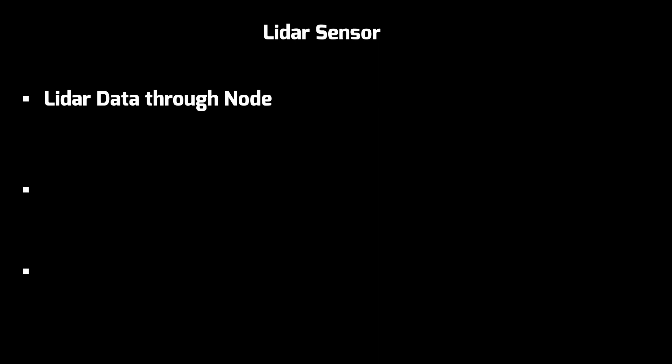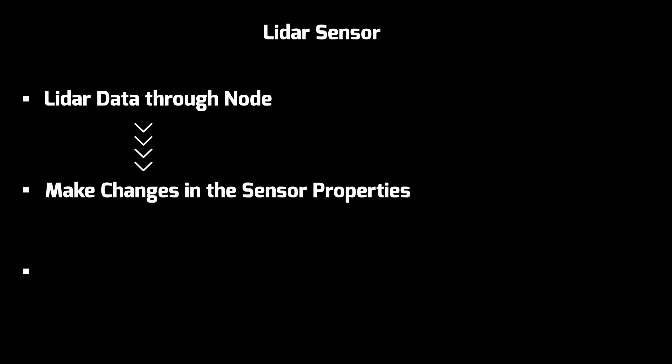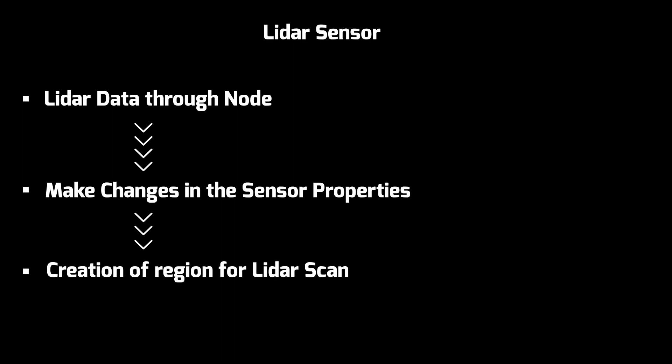First, we will understand the LIDAR data through our node. Then we will make changes in the sensor properties. And lastly, we will create regions of the LIDAR scan and detect in which region the object is placed. So let's start with the launch file and a node.